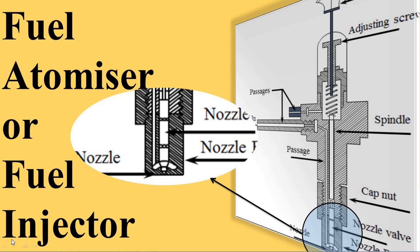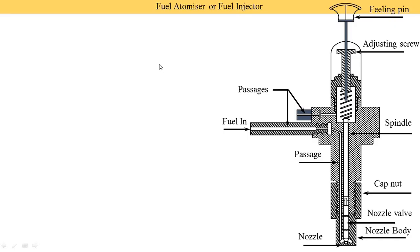In this video, I discuss the fuel atomizers or fuel injectors used in engines. First, I just revise a little bit. In this chapter, I start with the fuel supply systems. Fuel is first stored in a tank. From the tank, it goes to the filters, then to the pump, and from the pump, high pressure fuel comes to the injectors. From the injectors, it is finally supplied to the engine cylinder.